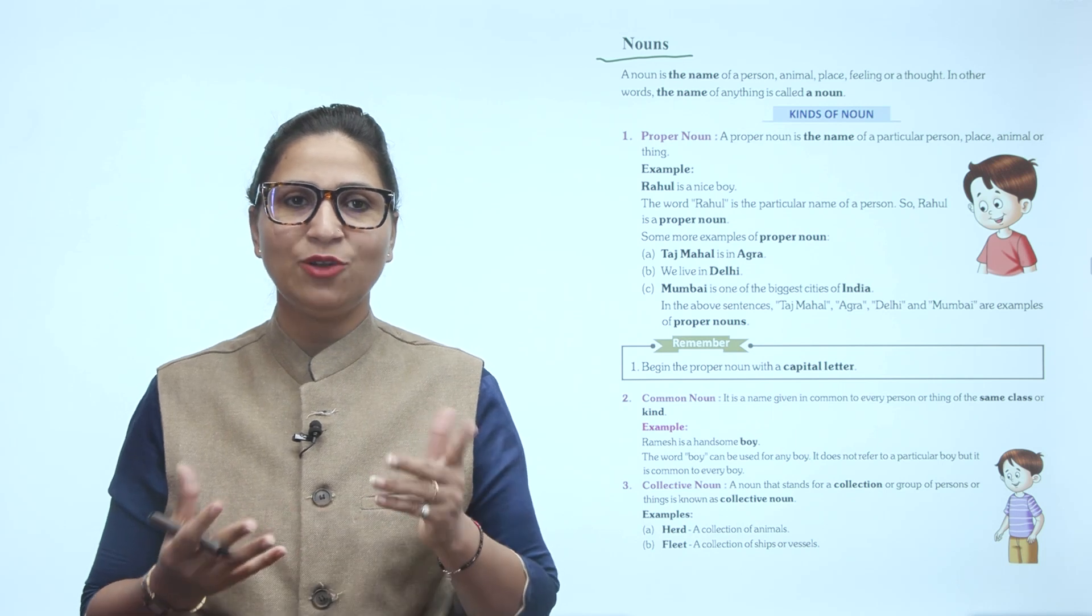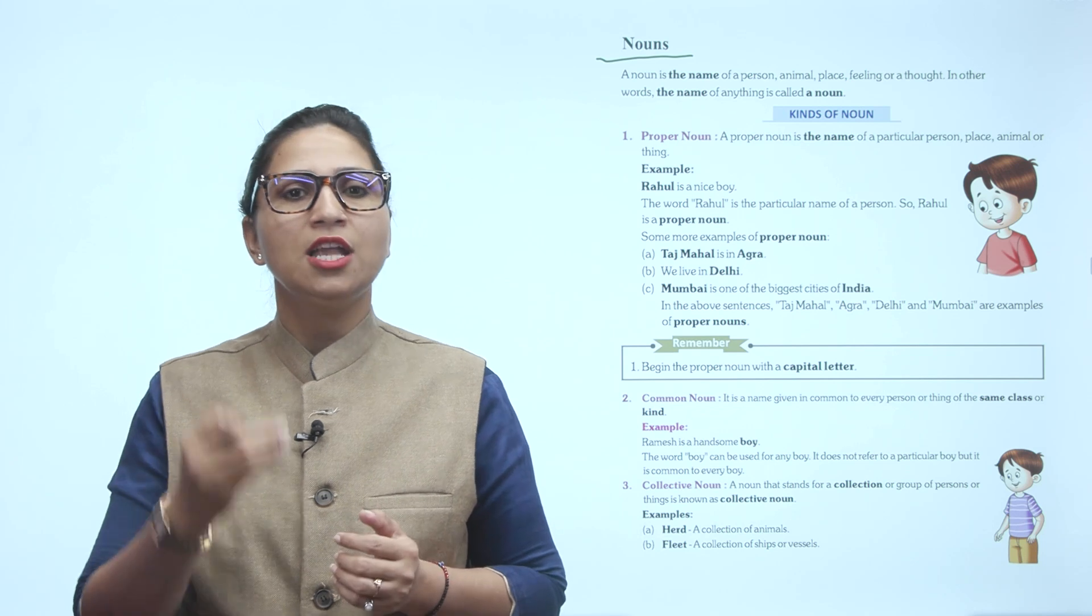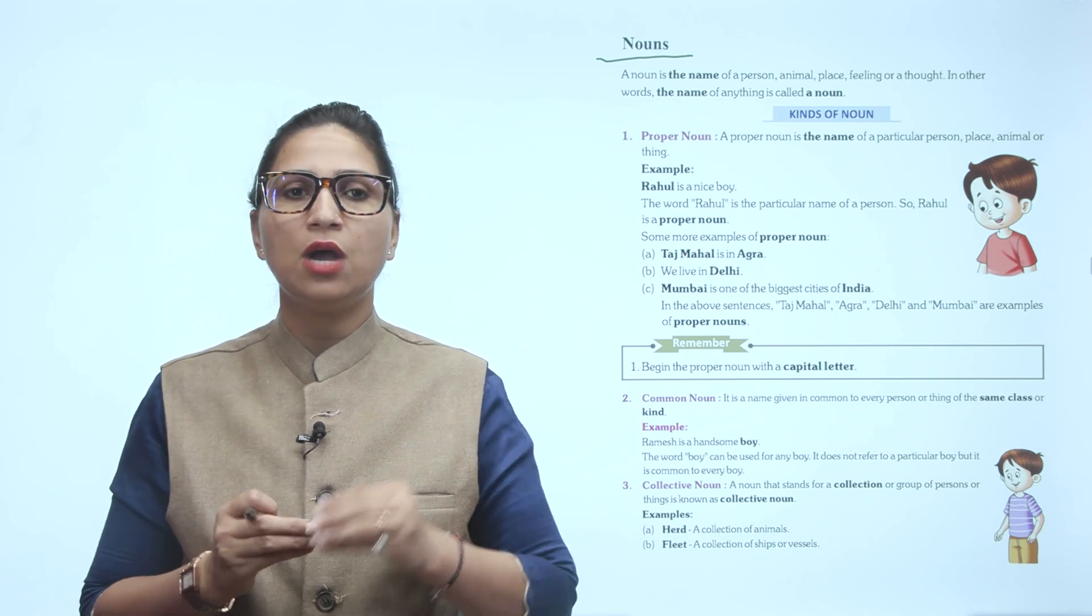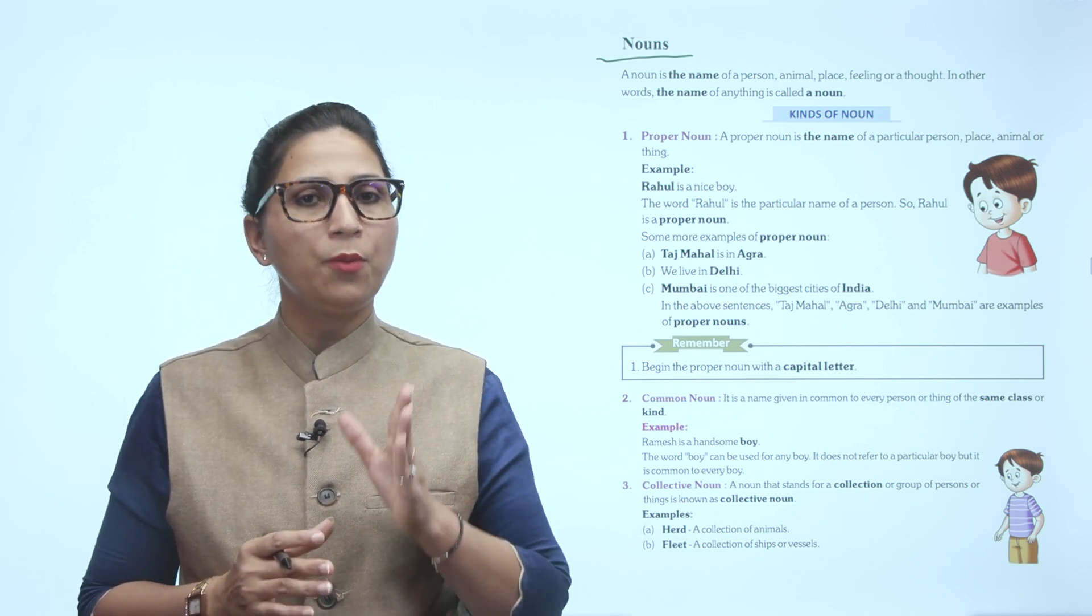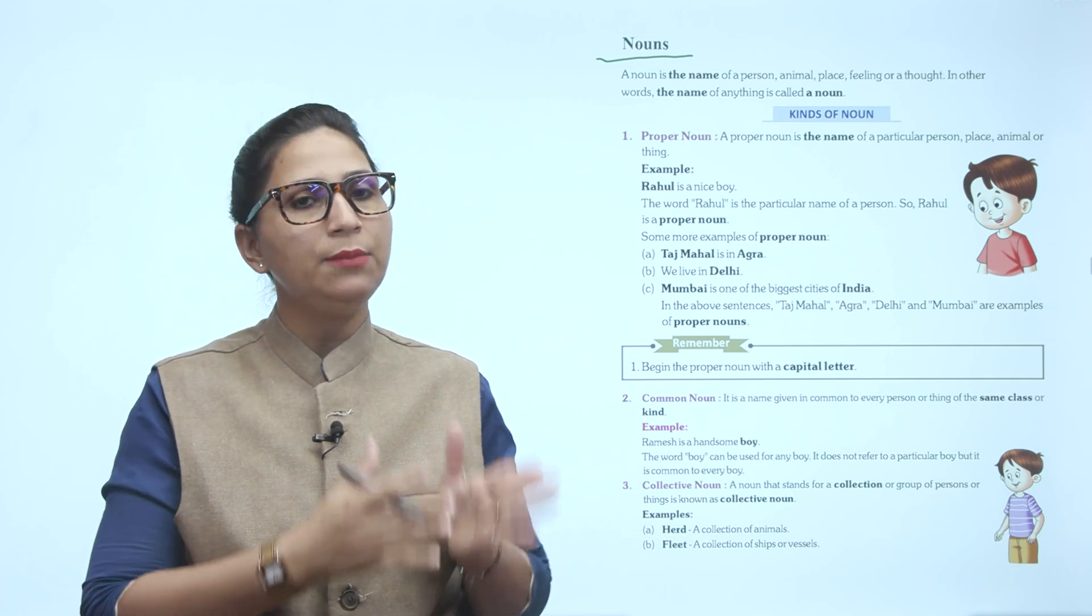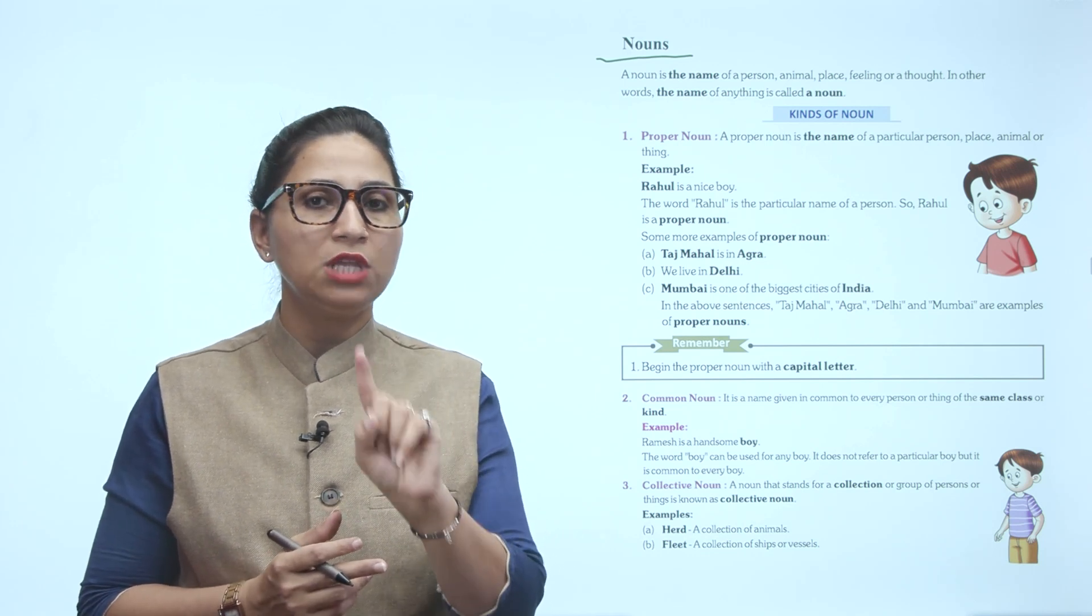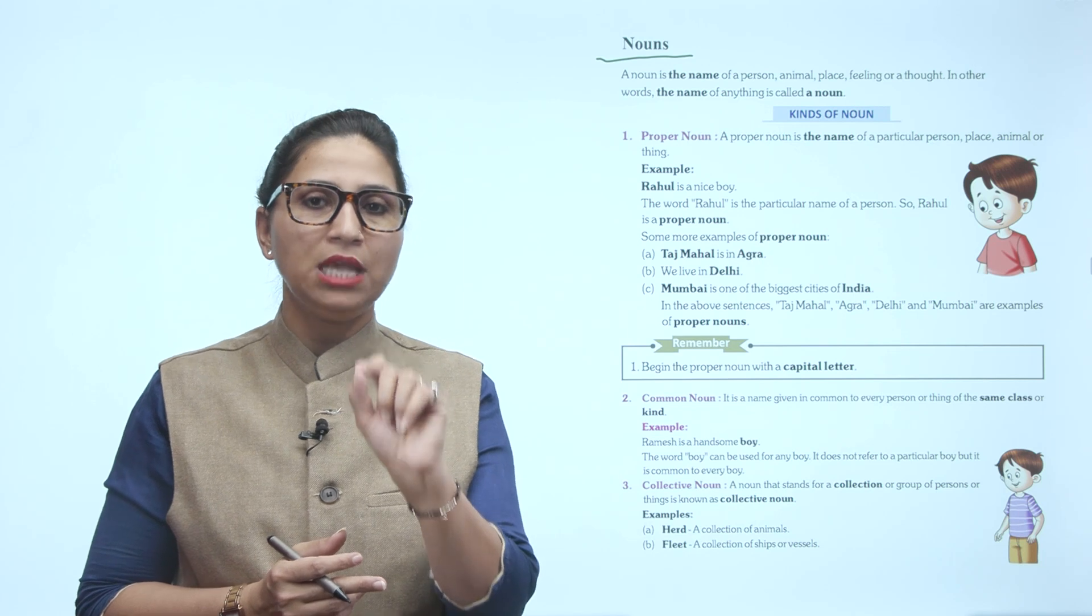So, kinds of nouns - first is proper noun. A proper noun is the name of a particular person, place, animal, or thing. You have to understand this word 'particular' - it means we are talking about a specific person, place, animal, or thing.